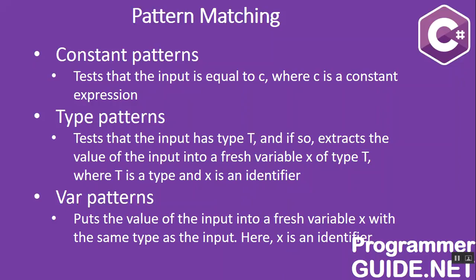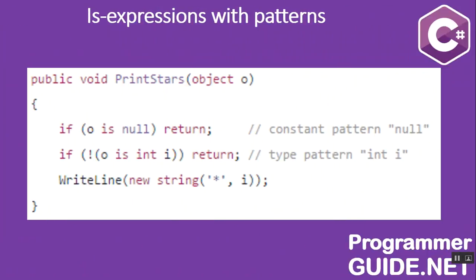C# 7.0 introduces the notion of patterns, which abstractly speaking are syntactic elements that can test a value as a certain shape and extract information from the value when it does. In the example using is-expressions with constants and type patterns, the pattern variables introduced by a pattern are similar to out variables in that they can be declared in the middle of an expression and used within the nearest surrounding scope. Like out variables, pattern variables are mutable.